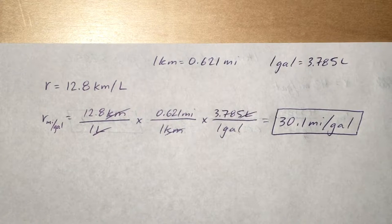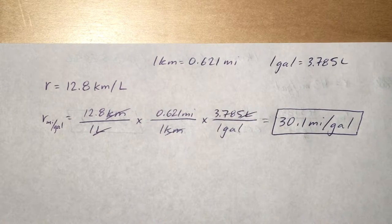Just like the last one, we need the two conversion factors. One kilometer equals 0.621 miles and one gallon equals 3.785 liters.